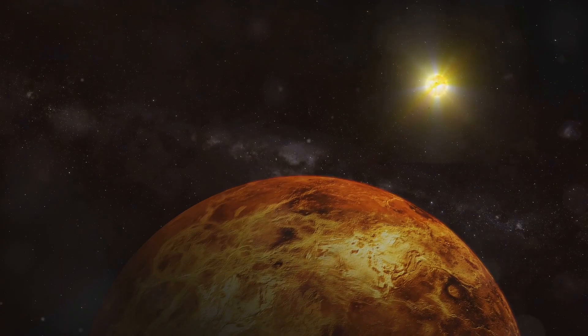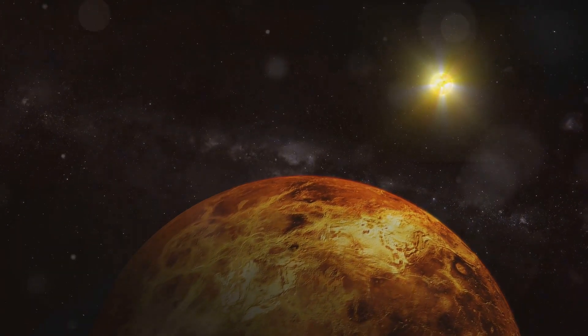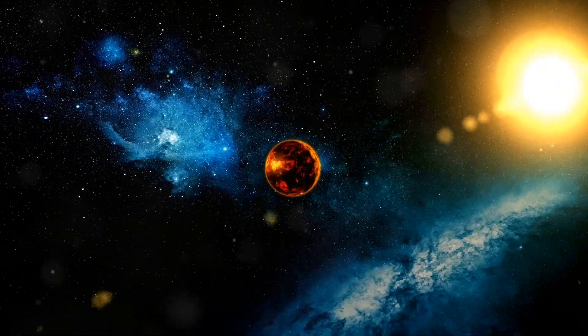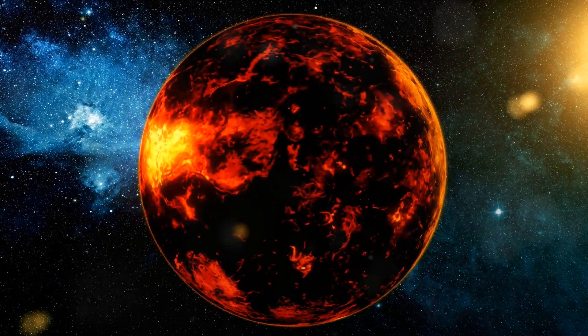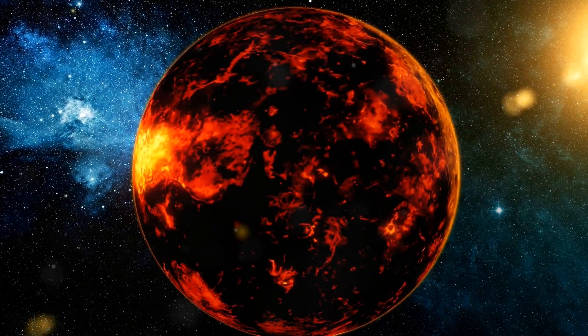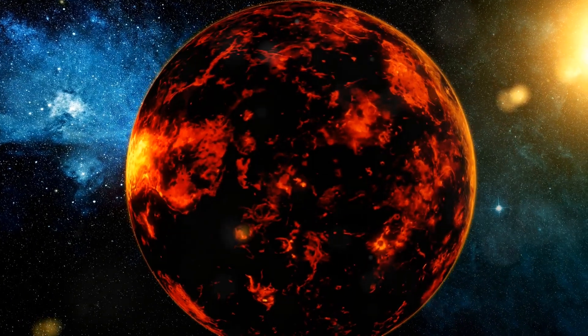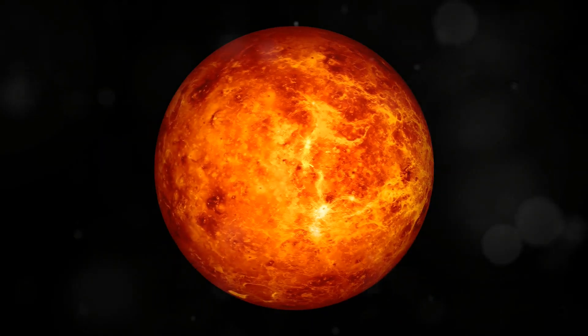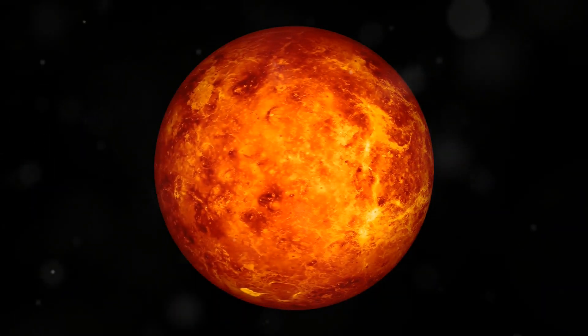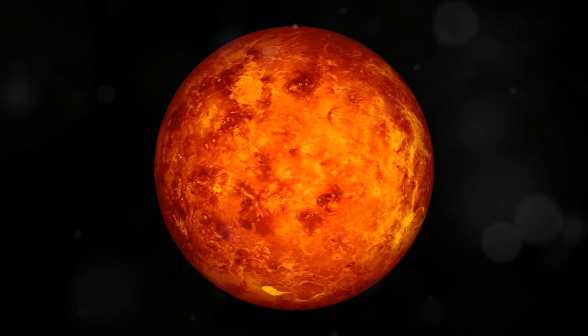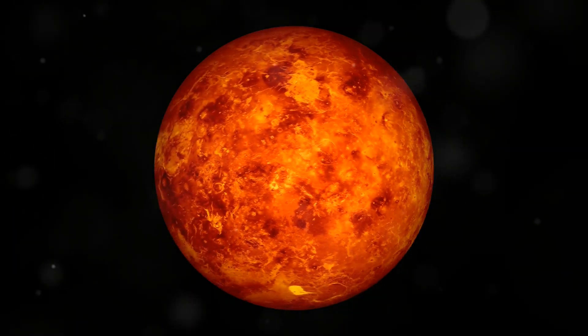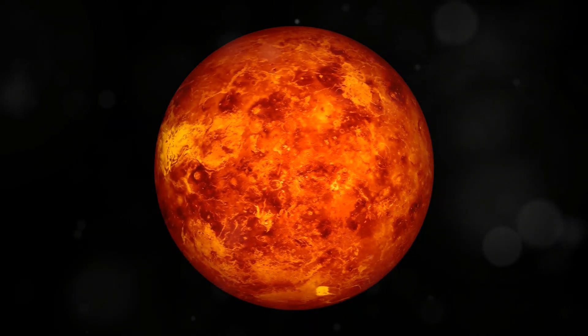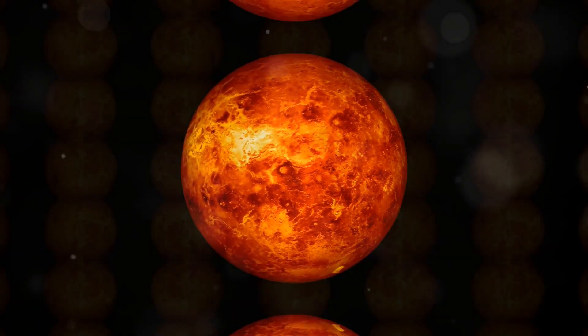Another key factor is the lack of a strong magnetic field on Venus. On Earth, the magnetic field protects us from the solar wind, which is a stream of charged particles ejected by the Sun. Without this protection, Venus was more exposed to the solar wind, which gradually stripped away its atmosphere, depleting it of hydrogen and oxygen, the essential components of water.